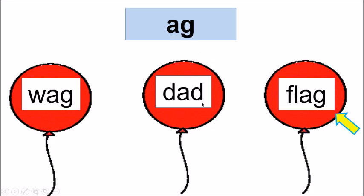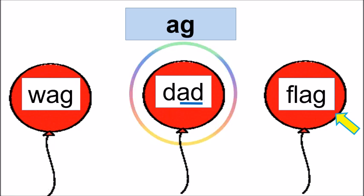AG and Dad — are they rhyming, children? No. Because Dad does not belong to the AG family. So AG and Dad are not rhyming. So this balloon is the odd one out. Now this balloon is going to pop.